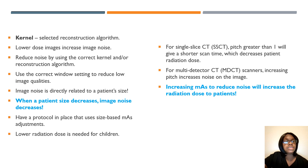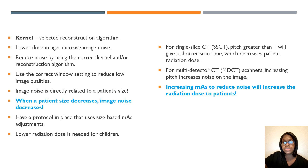Your kernel is the selective reconstruction algorithm. Whenever patient size decreases, image noise will decrease as well. Have a protocol in place that uses a size-based MA whenever you need to adjust. Lower the radiation dose needed for children. Increasing MA to reduce noise will increase the radiation dose to the patient — images will look better but patients will have a higher radiation dose.